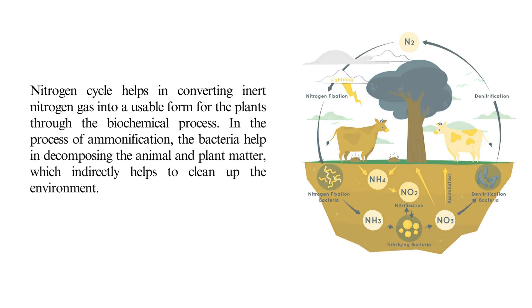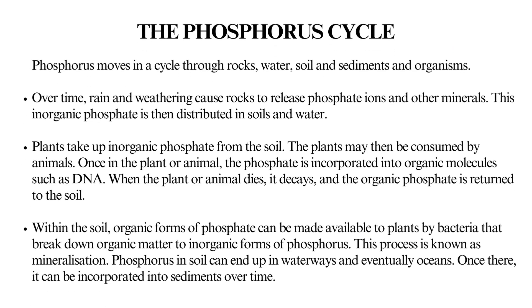In the process of ammonification, bacteria help in decomposing the animal and plant matter, which indirectly helps to clean up the environment. The phosphorus cycle: phosphorus moves in a cycle through rocks, water, soil, sediments, and organisms. Over time, rain and weathering cause rocks to release phosphate ions and other minerals.